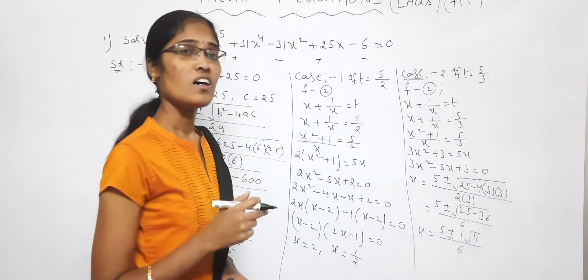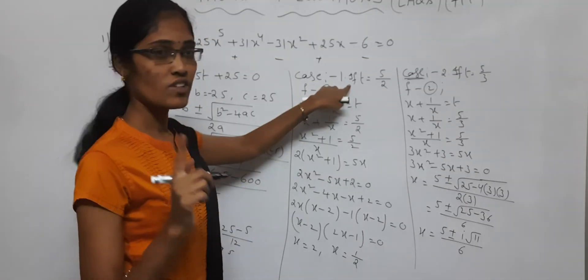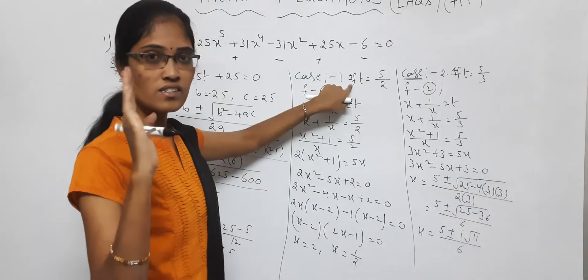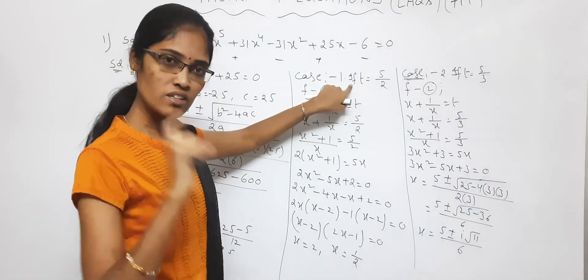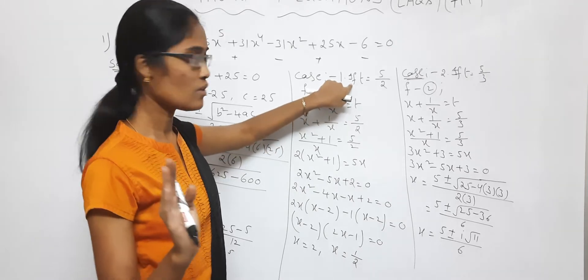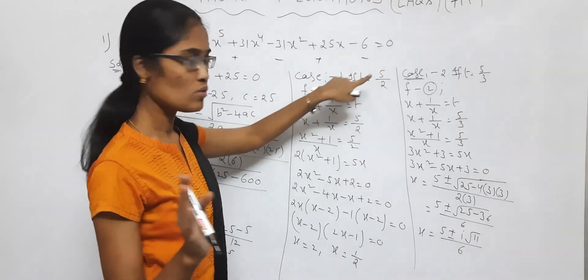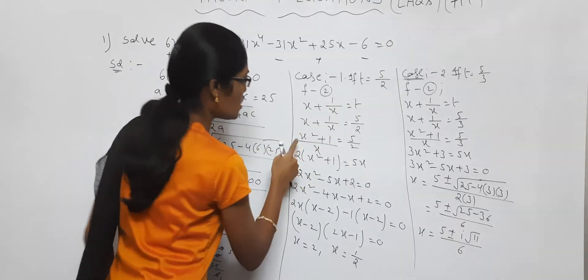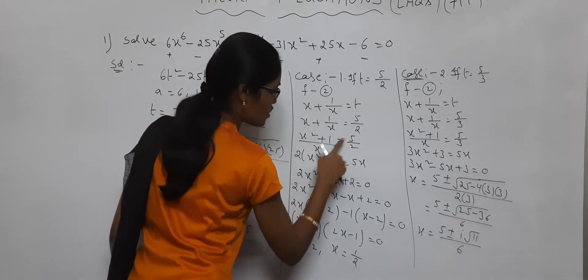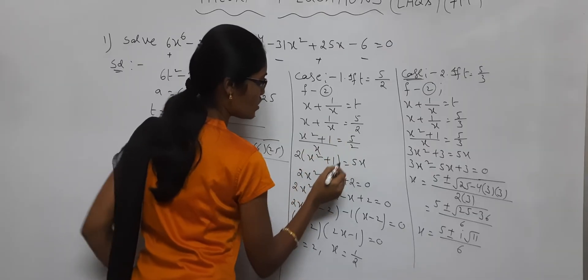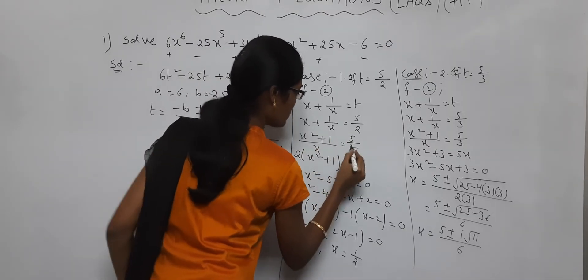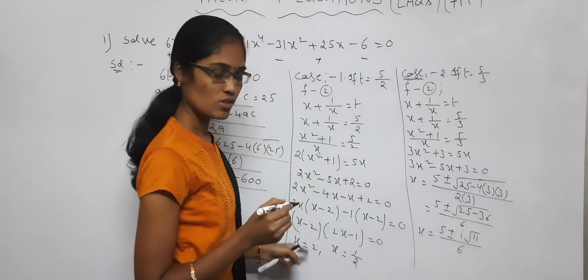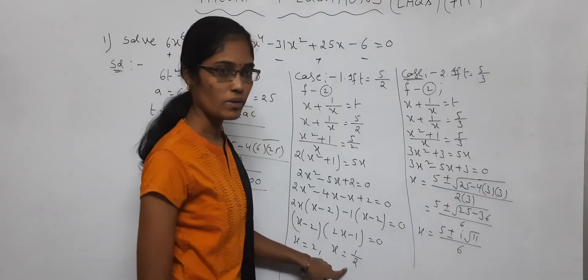Now substituting t values back into x plus 1 by x equals t. First taking t equals 5 by 2: x plus 1 by x equals 5 by 2. Taking LCM: x square plus 1 by x equals 5 by 2, so 2x square plus 1 equals 5x. Factoring this, we get x equals 2 and x equals 1 by 2.